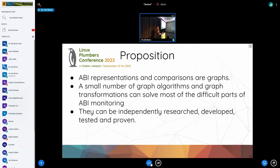So this is what I hope is true. ABI representations and their comparisons are graphs. With a small number of graph algorithms and graph transformations, we can solve all or nearly all of the difficult parts of ABI monitoring. And if we can solve the problems just for labeled graphs, then we can solve them for these more complex, concrete ABI representations. We can work on the pieces independently, share our work, prove our work, and unit test our work. This is what I hope is true. I believe at least the first part is definitely true.